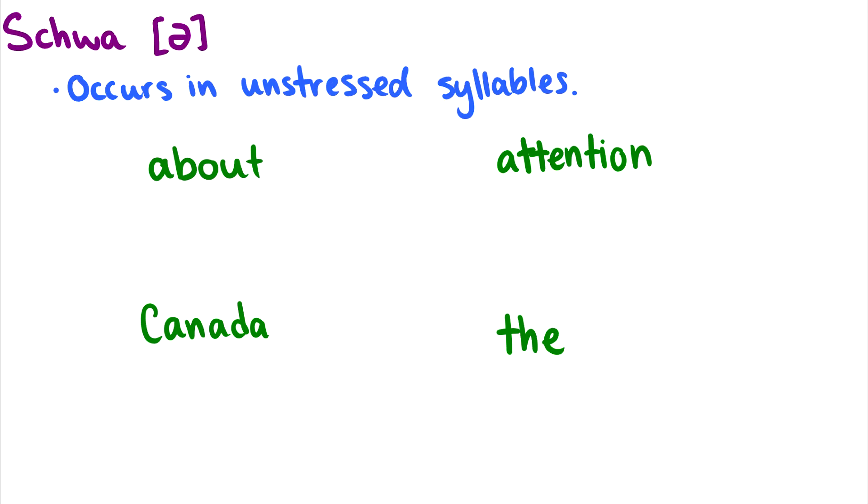Let's talk more about the schwa. What I said before is that schwa appears in unstressed syllables. One would be about. Another word like Canada. These two a's in Canada make that schwa sound.